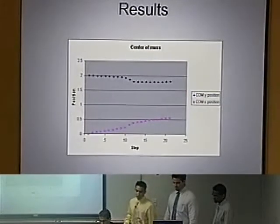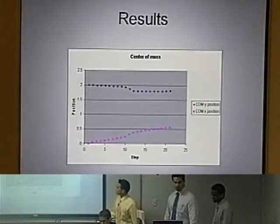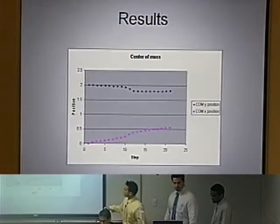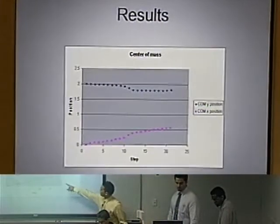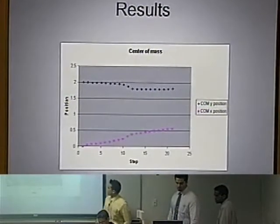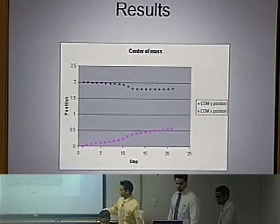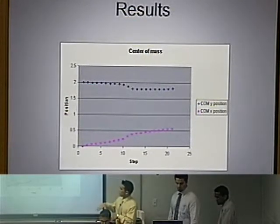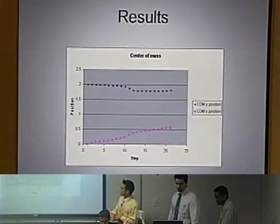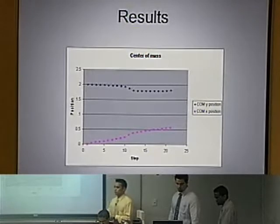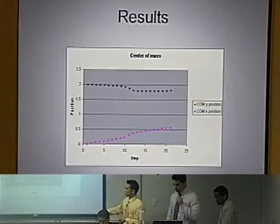Here are the results. The purple line shows the x-position of the center of mass starting from the balance starting position. As you move forward, the y-axis drops a little bit and the x-axis obviously increases relative to the grounded foot.